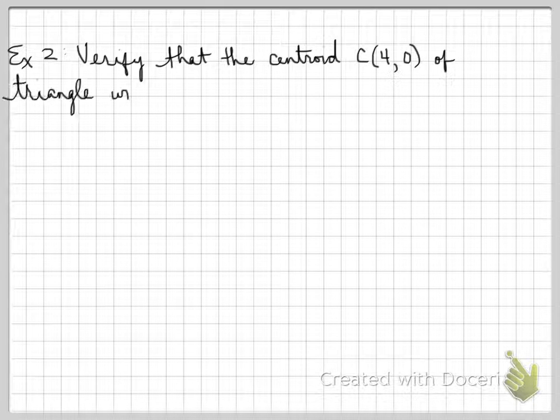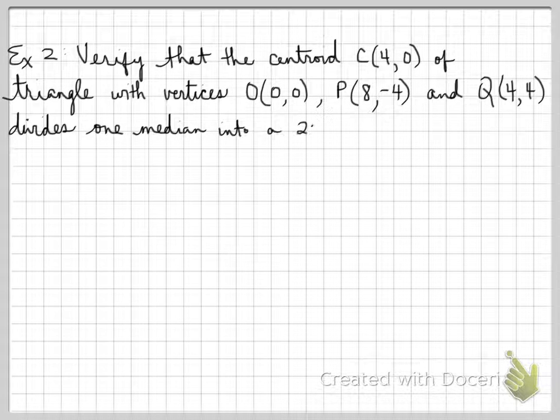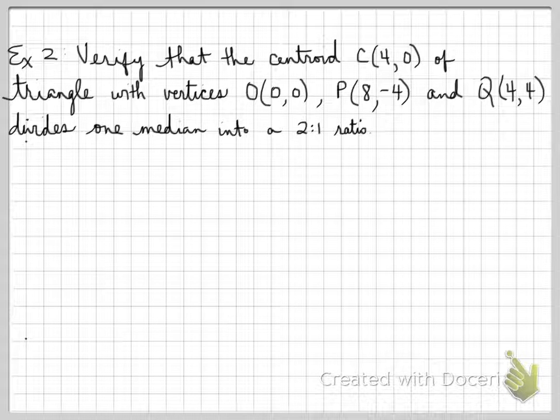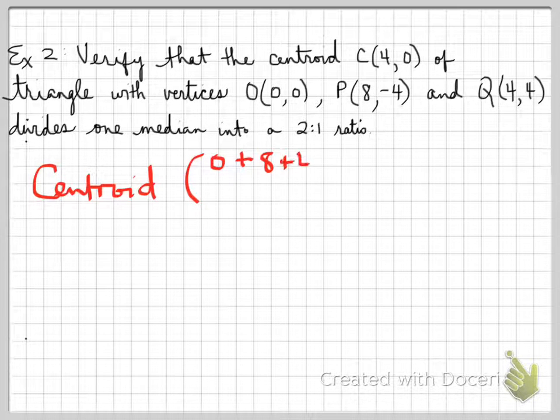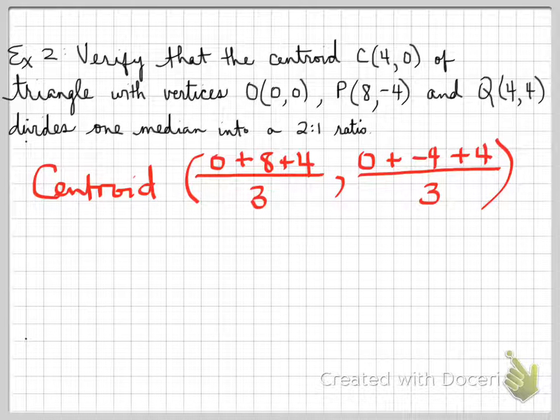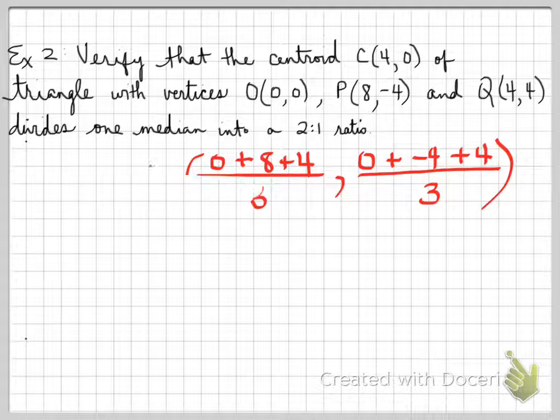Let's look at example two. Verify that the centroid of triangle with vertices O, P, and Q divides one median into a two-to-one ratio. You're to take the median and find out if that centroid (4,0) actually divides the median into a two-to-one ratio. A centroid is always calculated by adding up all the x's, taking the average of the x's, and the average of the y's. That is how a centroid is calculated. This is the fast way to find a centroid.